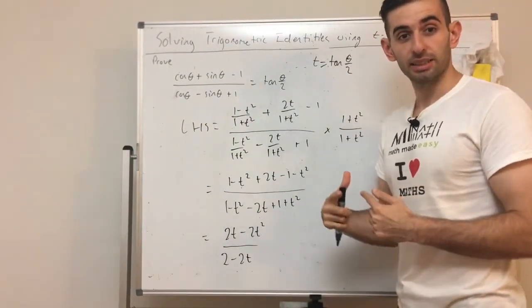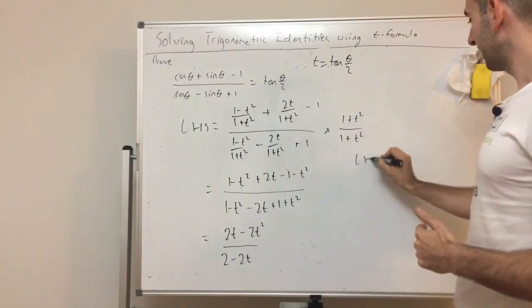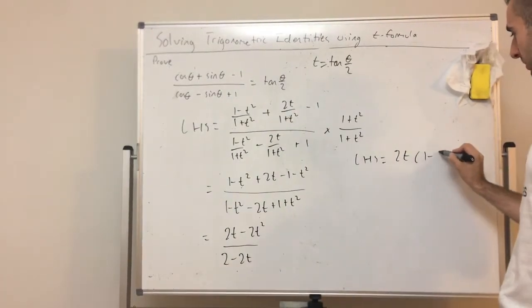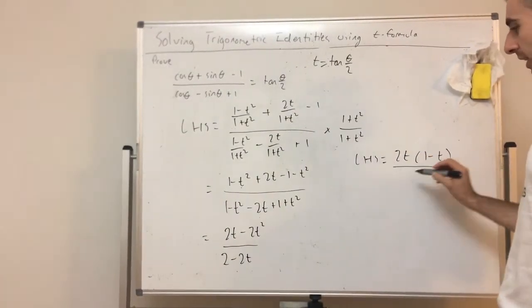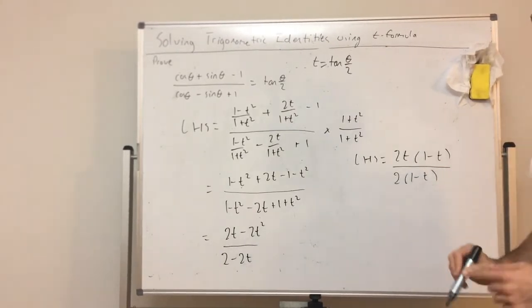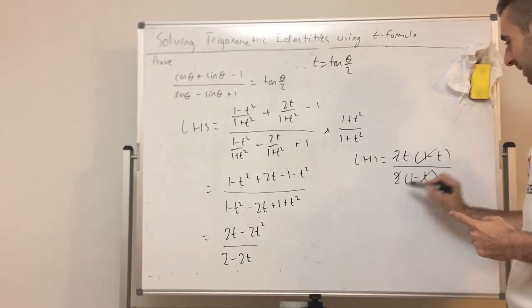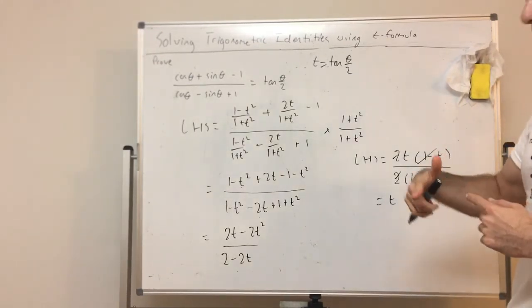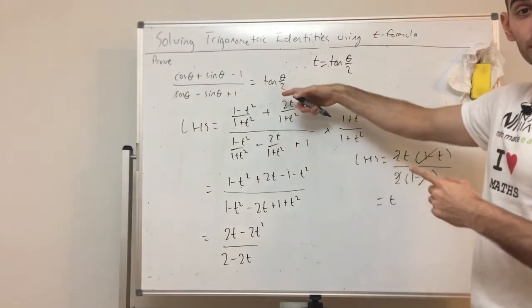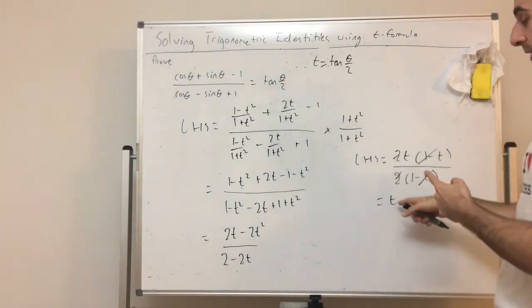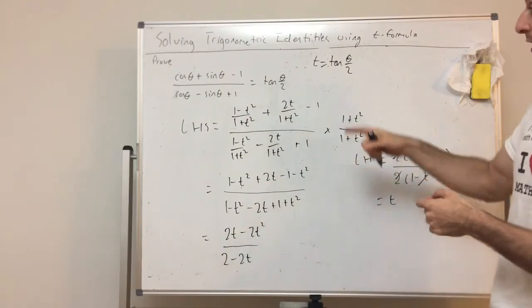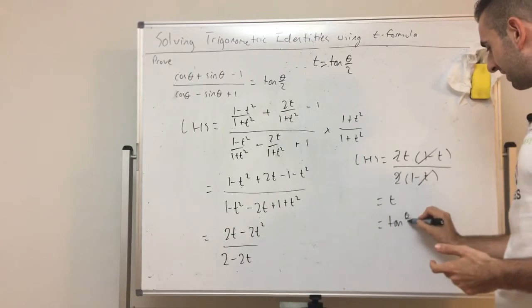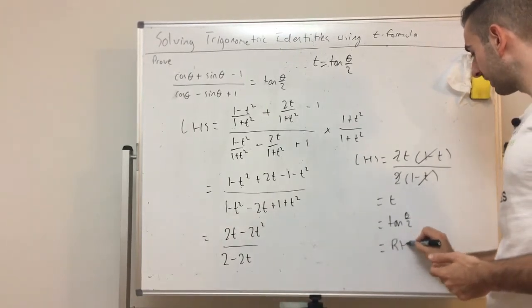So factorizing, I'll just write LHS. So here I can take a 2T out. So that's 1 minus T over. And I can take a 2 out of the bottom, 1 minus T. So look what cancels. The 2's, 1 minus T's, and I'm left with T. So at this stage, once I've canceled everything out, I look at what I'm trying to prove. I'm trying to prove it's tan theta on 2. So when you get your result in terms of just T, you just sub in that T is tan theta on 2, by definition. And that equals the right hand side.